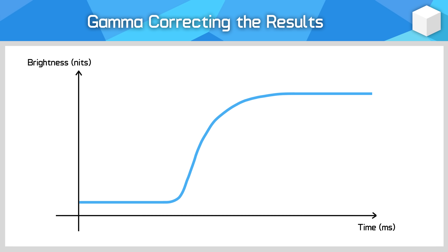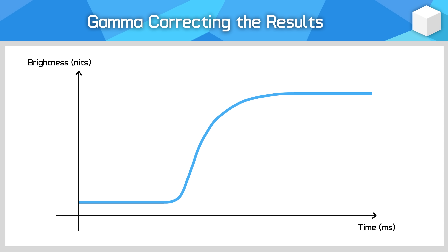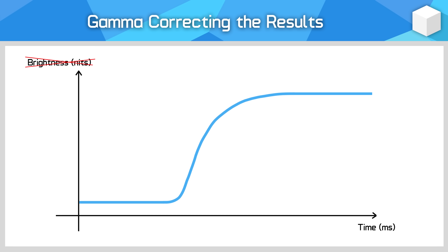His video goes into a full explanation of how it works, but I'll try and simplify it here. Back to our response time graph example — the basics of gamma correction is that we want to replace the brightness level output on the y-axis with the actual RGB values the monitor is showing. After capturing the monitor's gamma response, we can adjust the response curve appropriately. So now we are measuring the RGB value the monitor is outputting over time, rather than the linear brightness output — this is transforming our results to be gamma corrected.